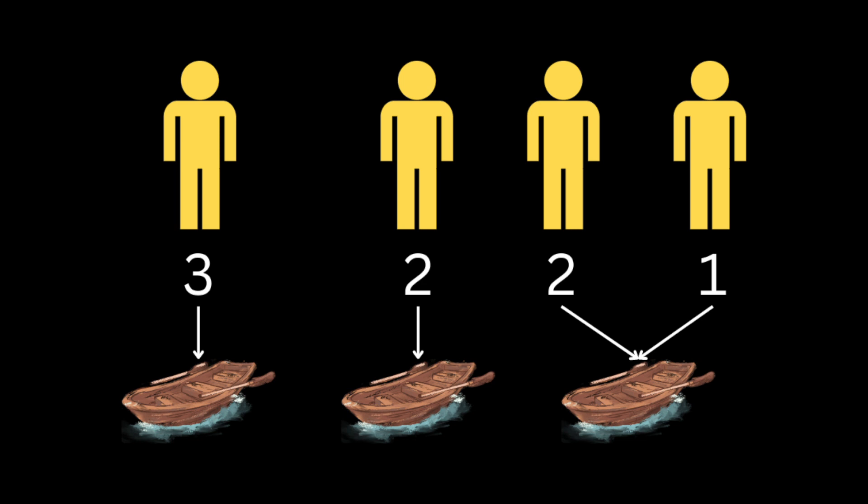Let's take another example. If the input is this array of weights and the boat limit is three, the answer will be three. The first boat carries the person with weight three, the second boat carries the persons with weights one and two, and the third boat carries the person with weight two.